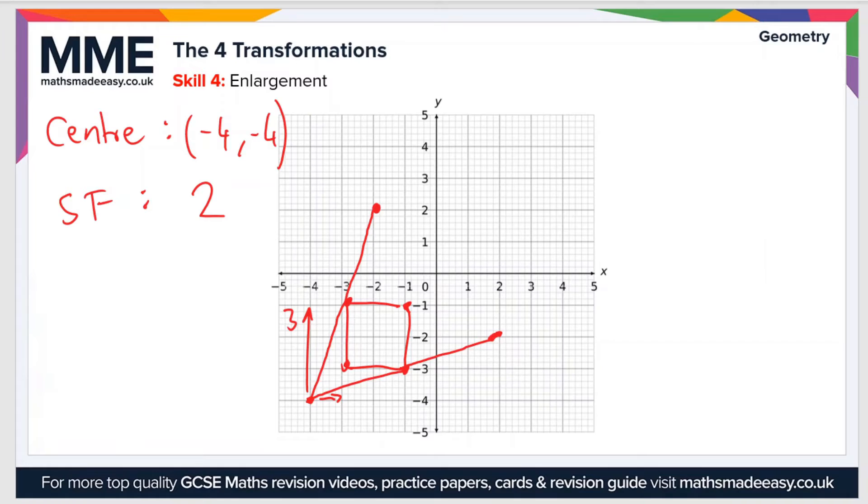If we do the bottom left corner, we've gone one square up and one square across. So we do the same again, one up one across, and that point maps to there. Then finally at the top right corner you can see that we've gone three across and three up to get to there.